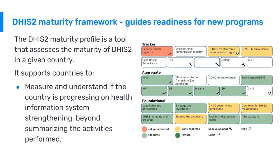Once you have DHIS2 already set up in a country, we have a tool called the DHIS2 maturity framework. This guides readiness for new programs — for example, if a country uses aggregate HIV, TB, and malaria and wants to add another program like EPI, or go deeper into a tracker program, it's useful to understand the current situation of the DHIS2 implementation. The maturity profile tool assesses the maturity of DHIS2 and supports countries in measuring whether they are progressing on health information system strengthening and if they're ready to move further, or if there are areas to address before moving to the next level.